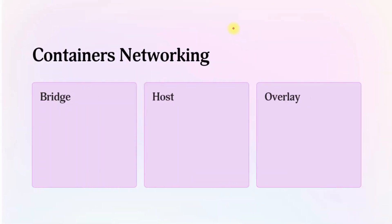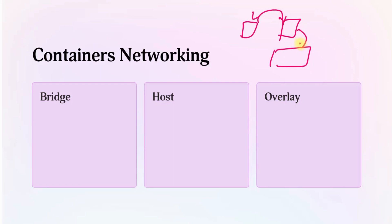Now let's understand container networking — how containers communicate with each other. Networking is an important aspect of containerization as it allows containers to communicate with each other and with external systems. You need networking for container-to-container communication, container-to-host communication, and communication between containers hosted on different hosts. In Docker, there are three networking modes: bridge, host, and overlay.